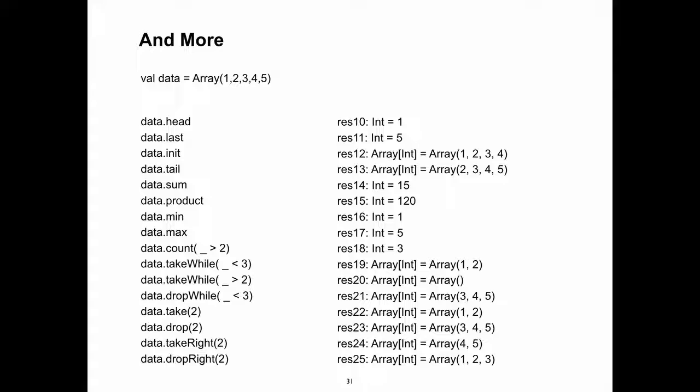What does take-while do? You take all elements and evaluate the condition — while it's true, keep going. As soon as it's false, you're done. So why is the result an empty array? Because the first element is 1, and 1 is not greater than 2, so the condition is false immediately and we're done.